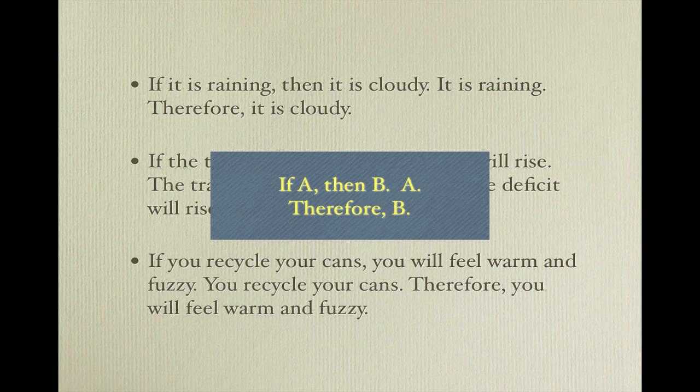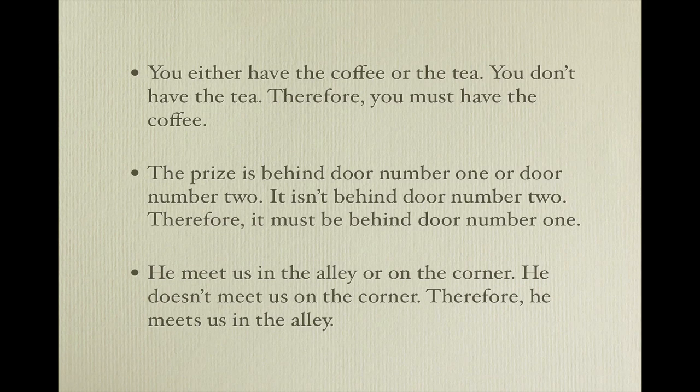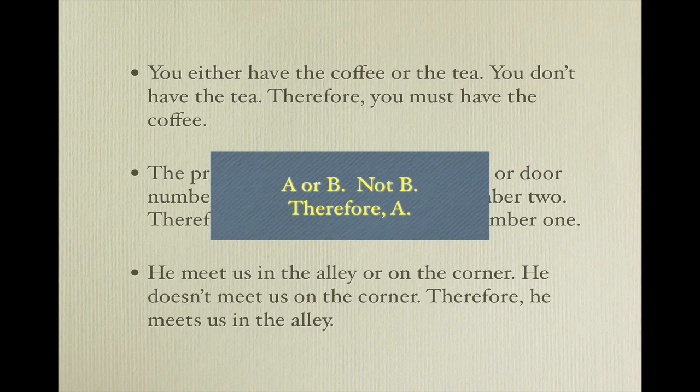Try to figure out the logical argument form for the following arguments. You either have the coffee or the tea. You don't have the tea, therefore you must have the coffee. The prize is behind door number one or door number two. It isn't behind door number two, therefore it must be behind door number one. And: he meets us in the alley or on the corner. He doesn't meet us on the corner, therefore he meets us in the alley. The argument form for these arguments is: A or B, not B, therefore A.